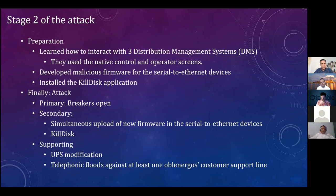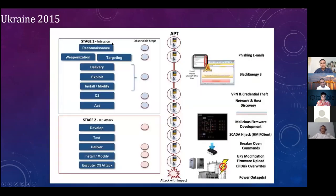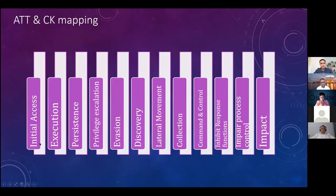They used the UPS modification to ensure there was no backup power and therefore no quick recovery — resulting in full darkness even inside the utilities themselves. At the same time, they created telephonic flood attacks against customer support lines, so customers couldn't reach the utilities, creating much more panic and possibility of damage. If you look at the MITRE ATT&CK mapping of the OT breach anatomy, it starts with initial access via phishing or other mechanisms, sometimes by placing a USB stick loaded with malware.